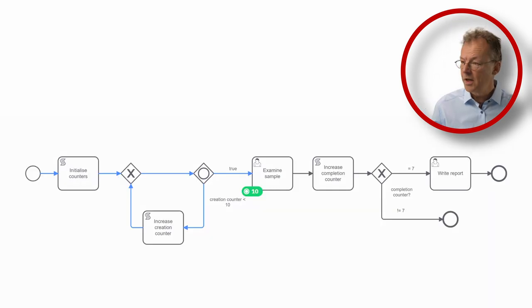We start with initialized counters and the first loop with the OR split here will create 10 tokens for examine sample and then when we finish the first, the second, the third and so on and so forth,